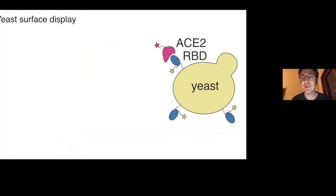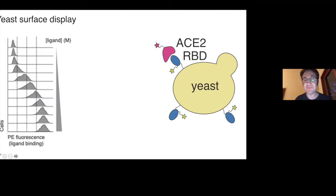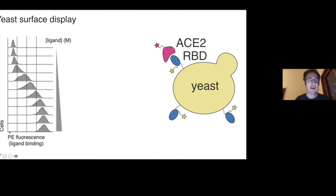One of our goals was to measure how mutations affect the receptor binding domain in very high throughput and very accurately. We can take the receptor binding domain and express it on the surface of yeast cells, then take ACE2 labeled with a fluorescent marker and bind that to the receptor binding domain. You can then run the yeast through a flow cytometer—when you have no ACE2, there's no fluorescent signal, and as you add more ACE2, the signal goes up until binding saturates.